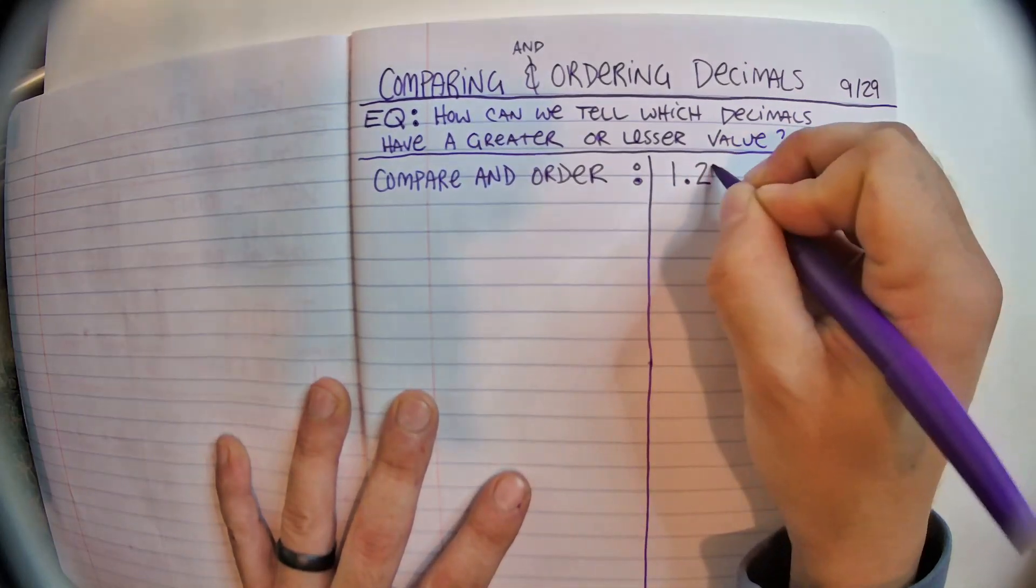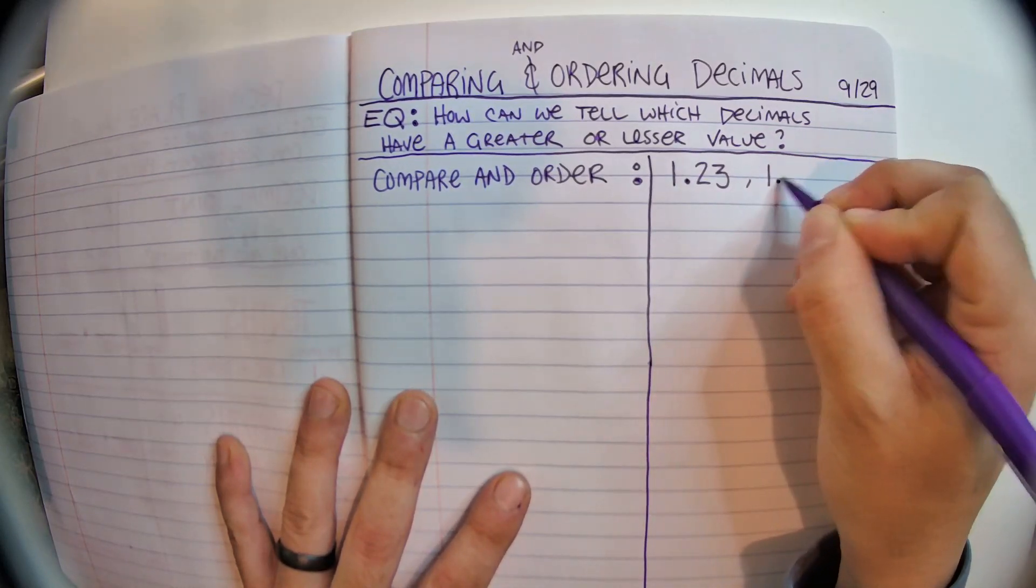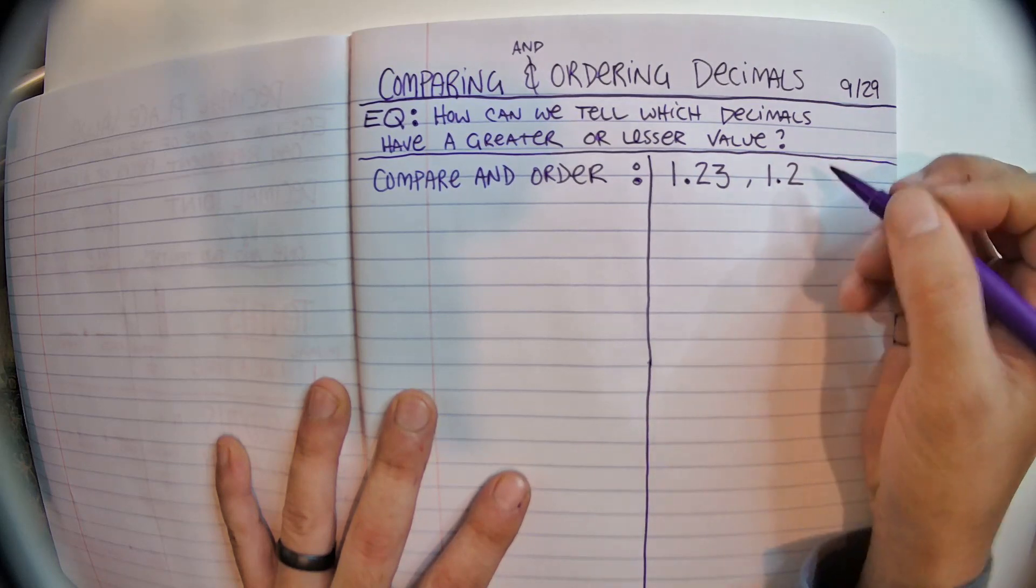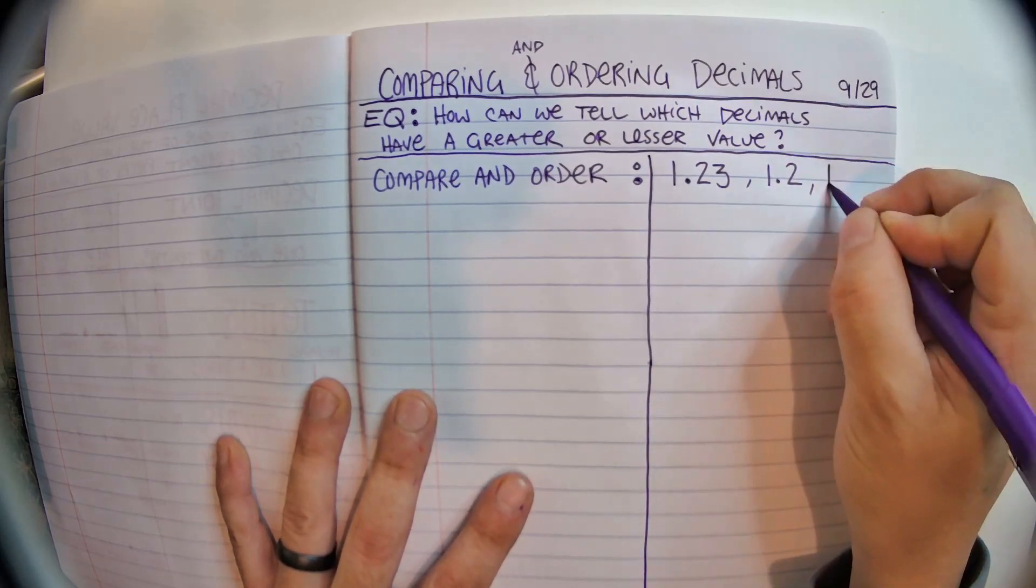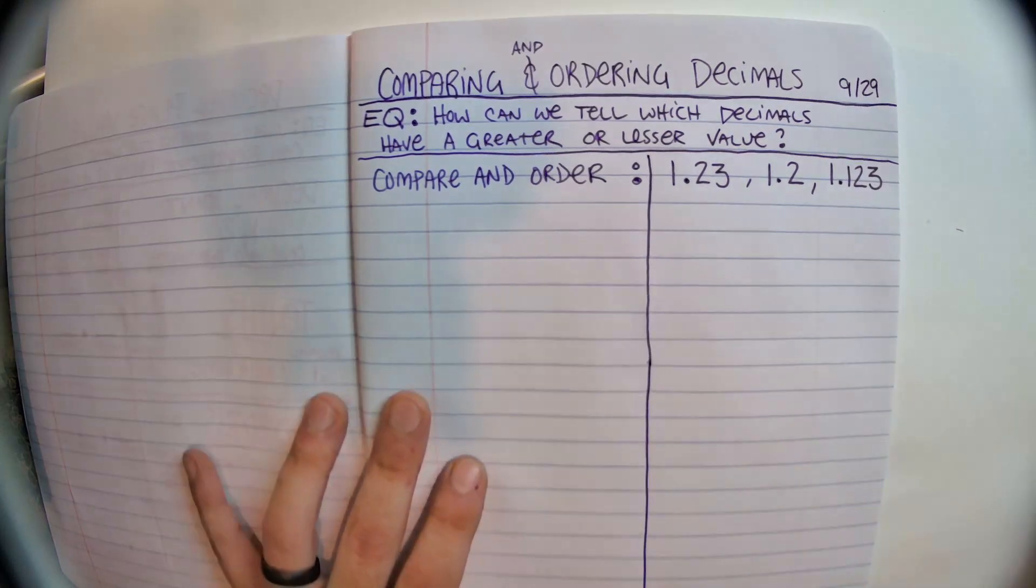1 and 23 hundredths, 1 and 2 tenths, and 1 and 123 thousandths.